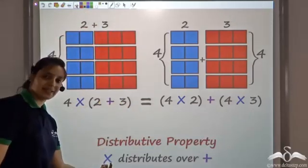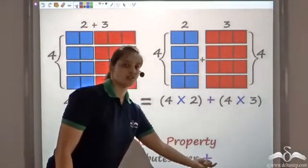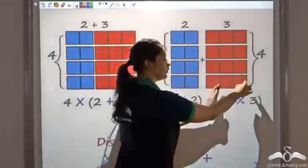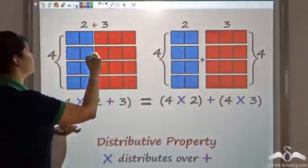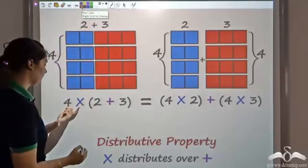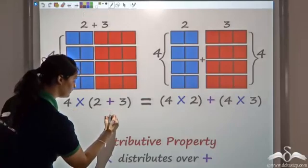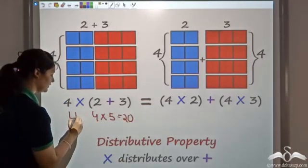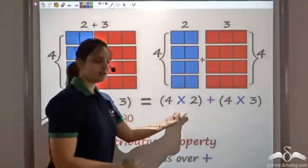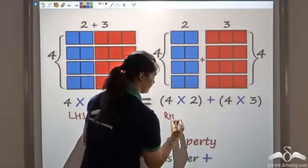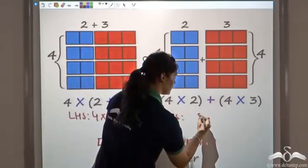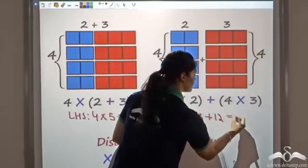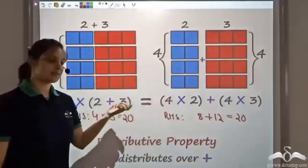So multiplication distributes over addition: 4 into 2 plus 3 gives me 4 into 2 plus 4 into 3. Mathematically also we can solve it: 2 plus 3 is 5, and 4 into 5 gives me 20 on the left hand side. On the right hand side, 4 into 2 is 8, plus 4 into 3 is 12, and 8 plus 12 again gives me 20. So 20 on both sides — this is equal to this.